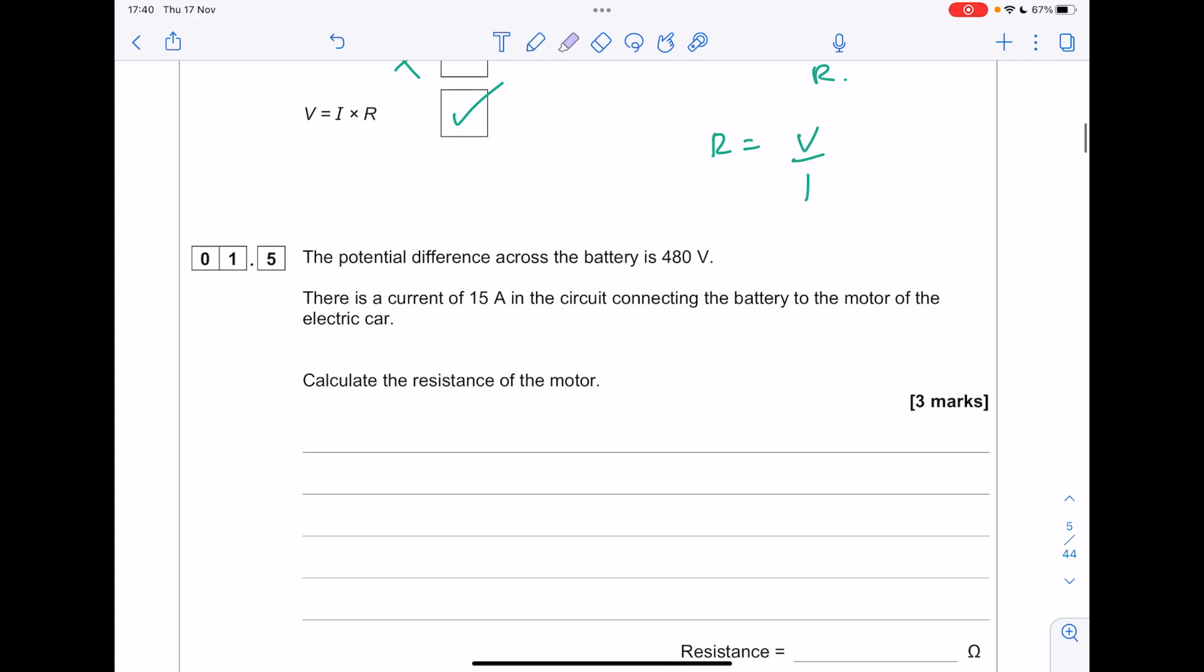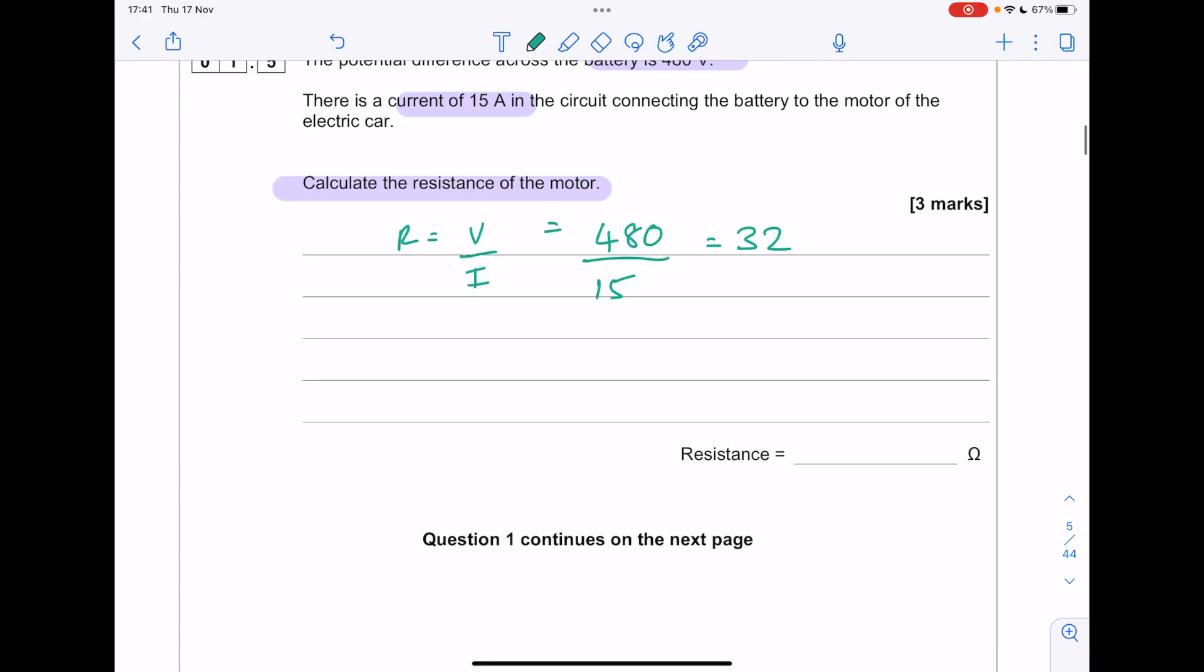The potential difference across the battery is 480 volts. There's a current of 15 amps. Calculate the resistance. So we want this version of the equation. Substitute in our potential difference, our voltage. The answer is 32 ohms.